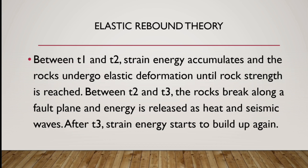Elastic Rebound Theory is categorized into three stages: T1, T2, and T3. In between T2 and T3, the rocks break along the fault plane and energy is released as heat and seismic waves. Just after the T3 phase, strain energy starts to build up again.